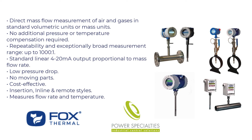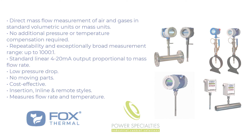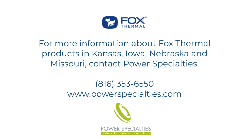Here is a summary of benefits for thermal mass flow technology: direct mass flow measurement of air and gases in standard volumetric units or mass units, no additional pressure or temperature compensation required, repeatability and an exceptionally broad measurement range up to 1000 to 1, standard linear 4 to 20 milliamp output proportional to mass flow rate, low pressure drop, no moving parts, cost effective, available in insertion, in-line, and remote styles, and measures both flow rate and temperature.